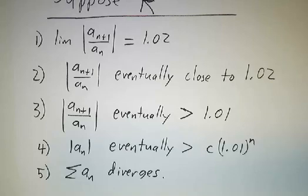If r is bigger than one, it diverges. If r is less than one, it converges absolutely. If r equals one, as we've seen with n cubed and n to the minus third, you just can't tell.